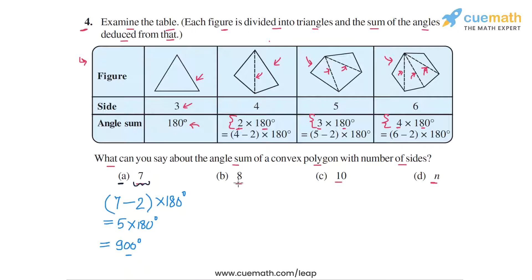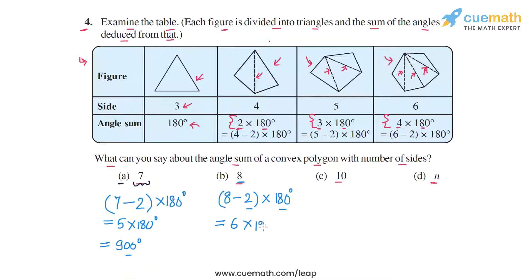Similarly, for a convex polygon with 8 sides, the number of triangular parts is 8 minus 2 = 6. The total sum of angles is (8 − 2) × 180 = 6 × 180 = 1080 degrees.